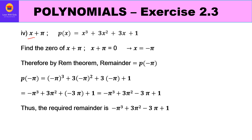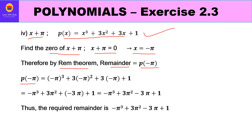In the fourth part, the divisor is x + π. Finding its zero by equating to zero gives x = −π. By the Remainder Theorem, the remainder is the value of the polynomial at x = −π. Replacing x by −π: (−π)³ + 3(−π)² + 3(−π) + 1 = −π³ + 3π² − 3π + 1. So the remainder is −π³ + 3π² − 3π + 1.